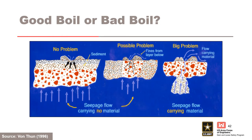Three potential conditions are distinguished by the source of material deposited. At the left, seepage water is not transporting material as it passes through surface deposits — the upward flow simply piles up finer-grained surface deposits, and there is likely no problem. In the middle, no material is carried by seepage water when it reaches the surface, but upward flow is sufficient to remove finer materials from surficial deposits — this is indicative of a possible problem. At the right, seepage is carrying material from the flow path which is able to escape, implying average gradients are high — the threat of tapping into impounded water is great, which is indicative of a potential big problem.